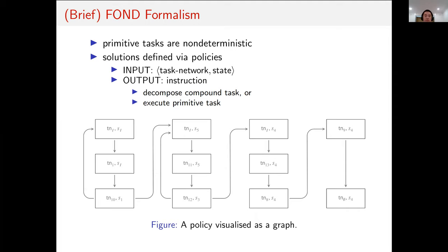The main difference between hierarchical and non-hierarchical planning is that the latter also takes in just a state as input, but here we take a task network and state as an input. Outputs are also different given that HTN planning is more complex. An output can be one of two instructions: one, we decompose a compound task, or two, we execute a primitive task.